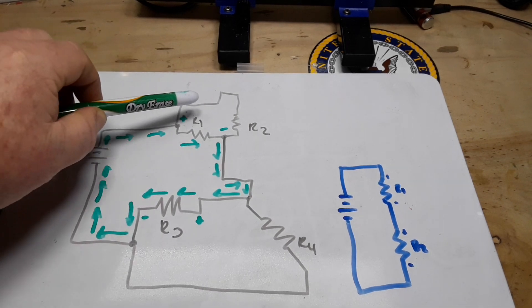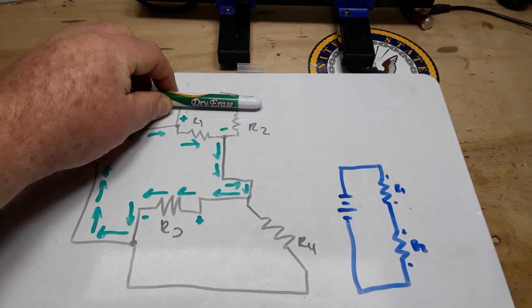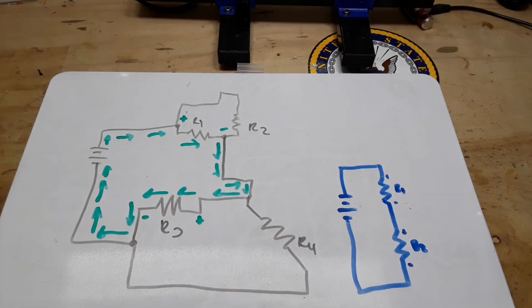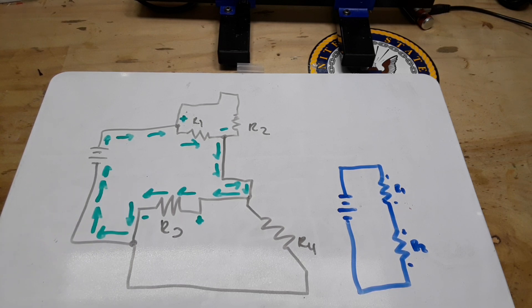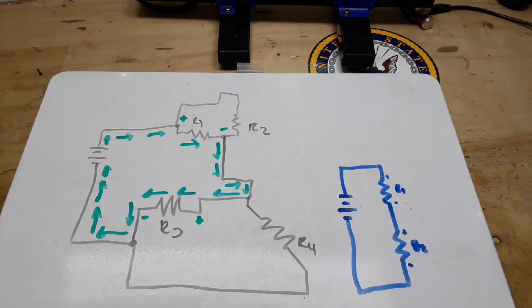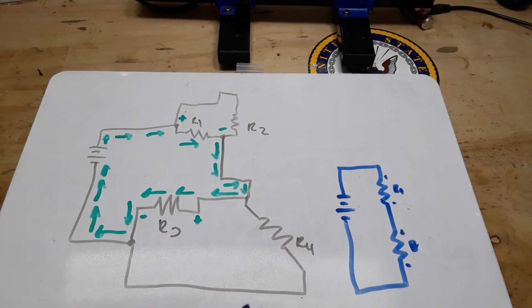Now what we can do - remember what I told you, these wire lengths and positionings don't really mean anything - we can simply draw on our other loops. Did I make a mistake already? I did, that is supposed to be R3.